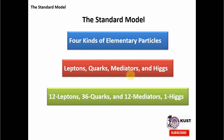For the mediators, we have four forces. The strong nuclear force has eight gluons as its mediators, and the electromagnetic force has one particle as its mediator — the photon. The weak nuclear force has three particles as its mediators: W plus, W minus, and Z naught. The graviton is not included here because it is the mediator of the gravitational force but has not yet been experimentally discovered.